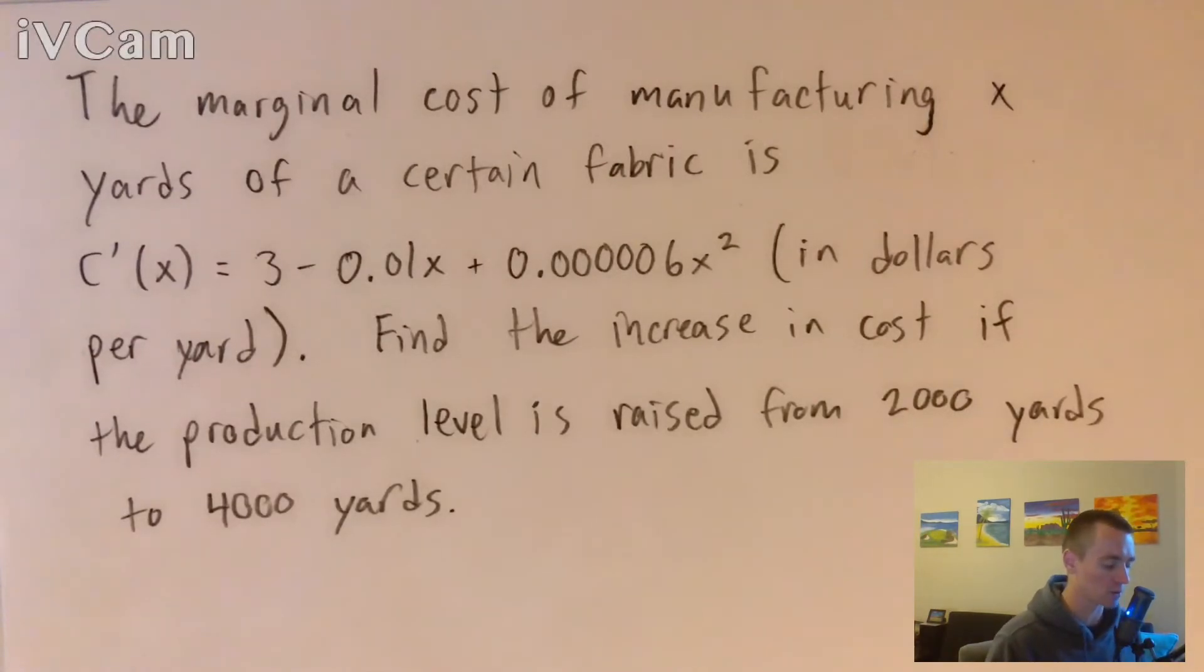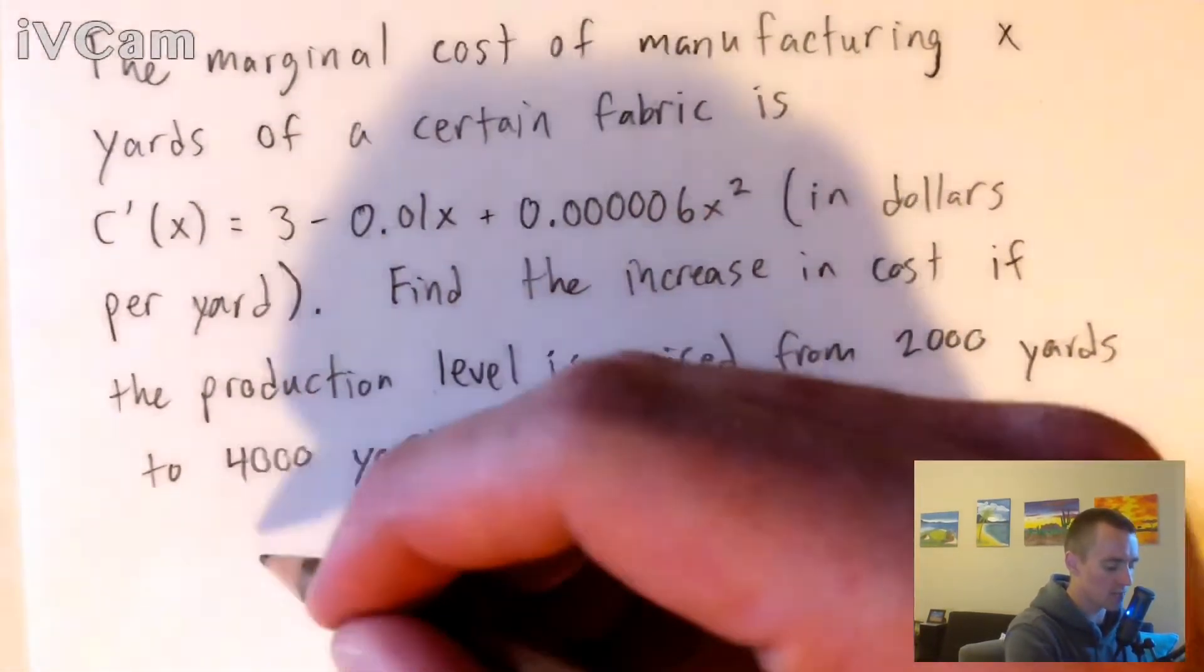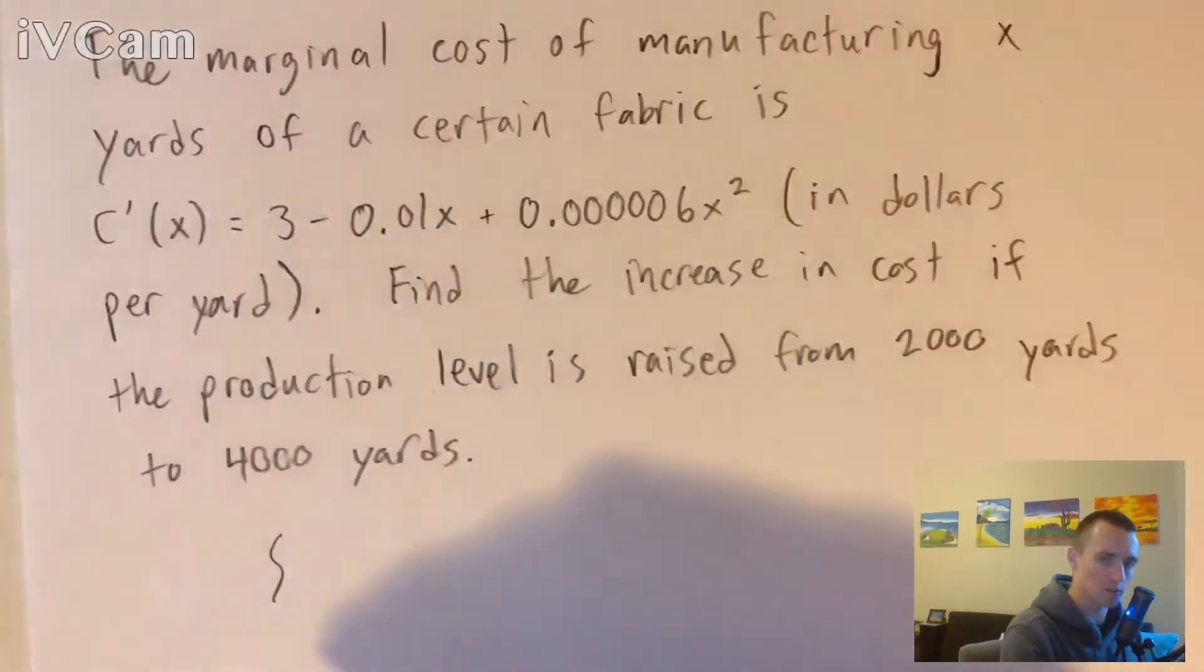That would give us our cost function, which then we can use to figure out the difference between 2,000 yards of production versus 4,000 yards of production.